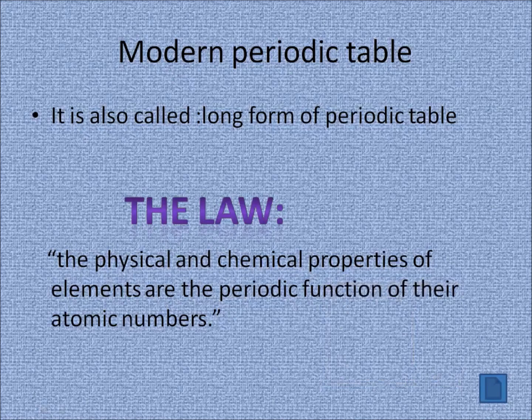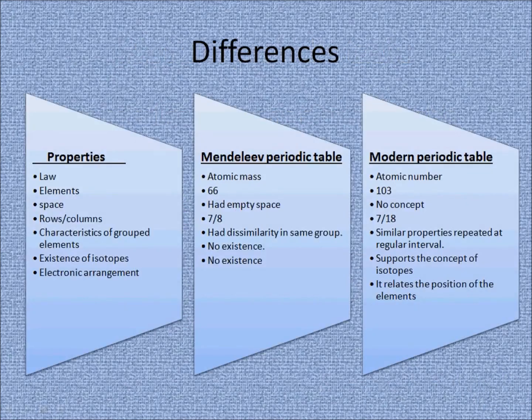Now, having understood the concept of modern periodic law, let's understand the difference between the Mendeleev periodic table and the modern periodic table. We know the concept of the periodic table, which is the arrangement of chemical elements according to their chemical and physical properties. The modern periodic table was created after a series of different versions of periodic tables. The Russian chemist Professor Dmitri Mendeleev was the first one to come up with the structure of periodic tables with columns and rows.